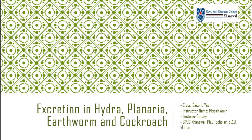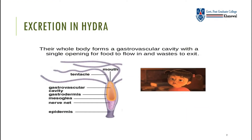First of all, excretion in hydra. Hydra is the most simplest organism; basically it is a cnidarian. It has a gastrovascular cavity with a single opening — it is not a tubular system, it does not have two openings, it has a single opening called the mouth. Useful products enter and excretory waste exits through this mouth. Essentially, waste products are removed by diffusion between the body and the surrounding water.